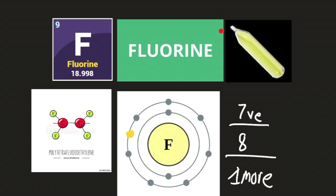Fluorine is a yellowish gas — this is how it looks if you were to contain it in a glass container. By the way, don't put fluorine in a glass container, especially as hydrofluoric acid, because it will eat through glass. In fact, people use fluorine to etch silicon wafers and silicon chips. For example, the computer used to edit this video contains a silicon chip that was etched using hydrofluoric acid.